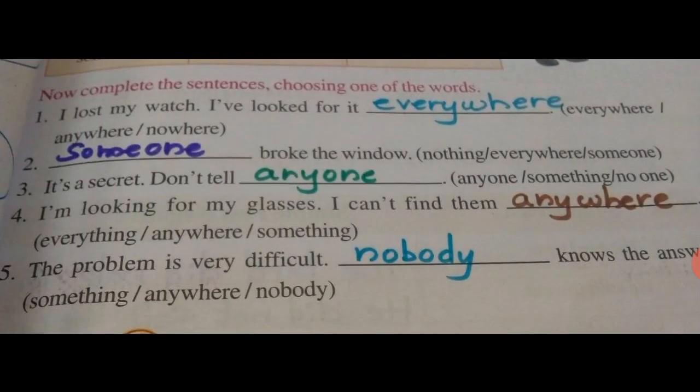Now we will do some exercises. Fill in the blanks using the correct indefinite pronoun. First: 'I lost my watch. I have looked for it dash.' Options: everywhere, anywhere, nowhere. Since you look for it in all places, the answer is 'everywhere.' So: 'I lost my watch. I have looked for it everywhere.' Second: 'Dash broke the window.' Options: nothing, everywhere, someone. If you don't know who broke the window, you say 'someone broke the window.'